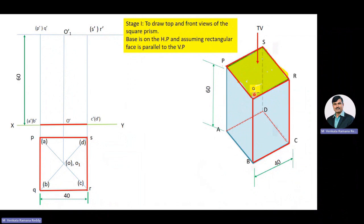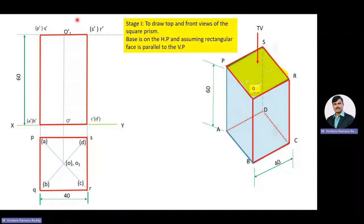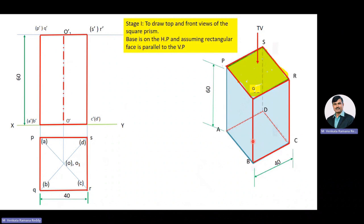The face edge BQ is also visible, the side QR is visible, face edge RC is visible, and O'O1' is the axis line. With this, we have completed drawing the top view as well as the front view of the square prism when it is resting on its base on HP and one of the rectangular faces is parallel to the VP.